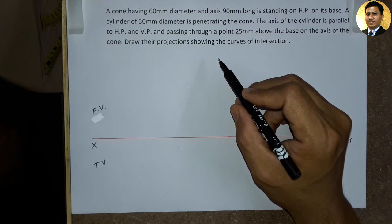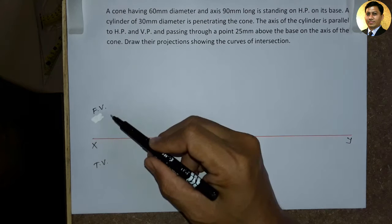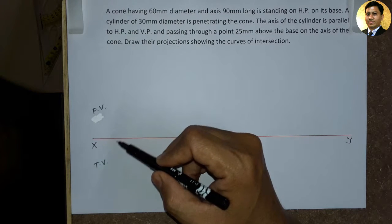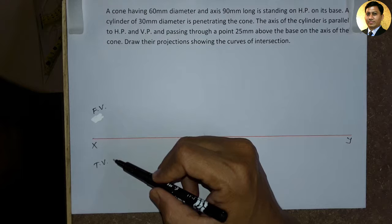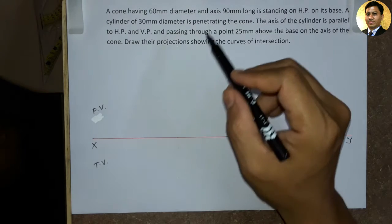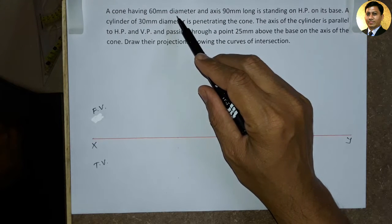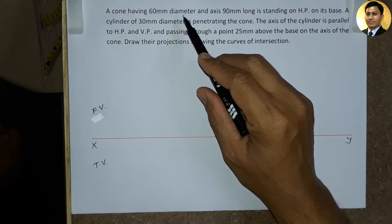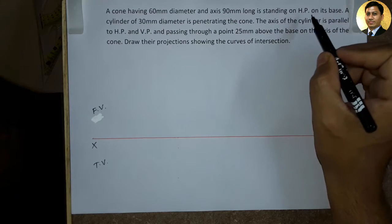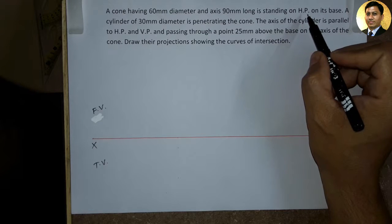First quadrant ki theory ke mutabik, object ka front view hamesha x-y line se upar ki disha mein draw kiya jata hai. Aur object ka top view hamesha x-y line se niche ki disha mein draw kiya jata hai. Cone ka base diameter 60 mm hai aur axis height 90 mm hai, woh apne base per horizontal plane per rest ho raha hai.